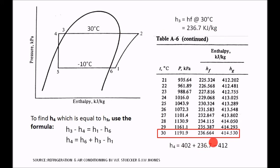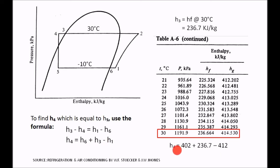Therefore, H4 equals H6 (402) plus H3 (236.7) minus H1 (412), which equals 226.7 kJ/kg. That is our H4. And since H4 equals H5, H5 is also 226.7 kJ/kg.